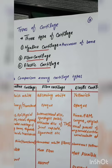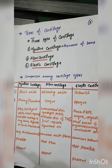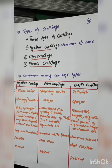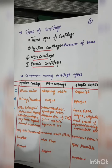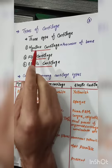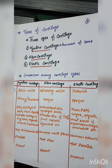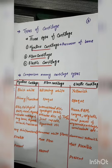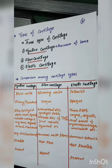In the previous lecture, we discussed bone. There are three developmental classifications of bone. If you have hyaline cartilage, it will serve as a precursor of the bone. The hyaline cartilage develops into bone as part of the developmental process.